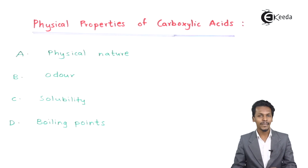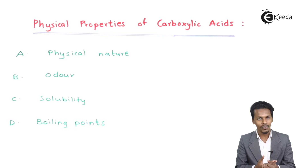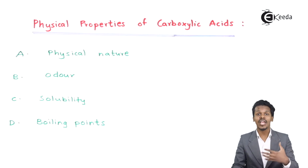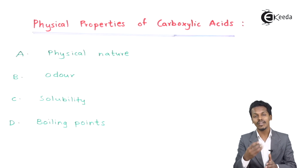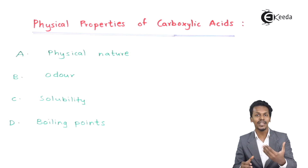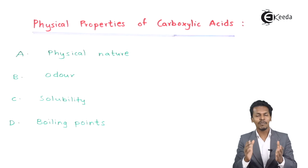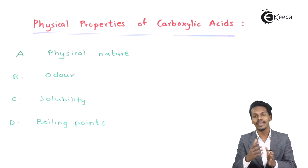Talking about solubility — this is an important point. The aliphatic carboxylic acids with a carbon content from carbon number 1 to carbon number 4 are highly soluble in water and can be easily dissolved. Carboxylic acids with more than 4 carbons are not easily soluble in water, because the alkyl or hydrocarbon groups present are hydrophobic towards water. However, all carboxylic acids are very easily soluble in organic solvents like alcohol and ether.